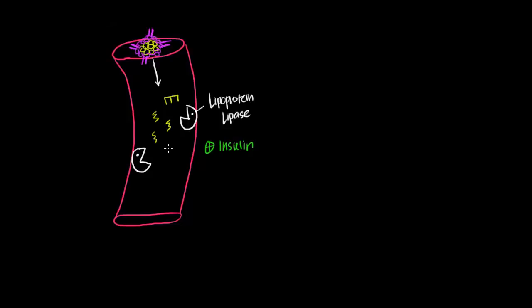Notable exceptions are your brain, because fatty acids cannot cross the blood-brain barrier, as well as red blood cells, which don't contain mitochondria. Mitochondria are very important for the oxidation of fatty acids, which yields ATP. So without mitochondria, we can't extract energy from fats.